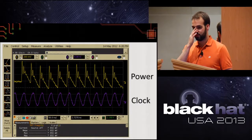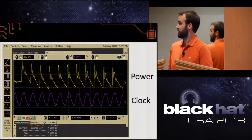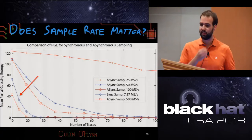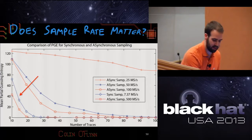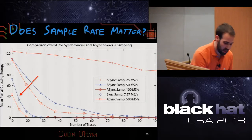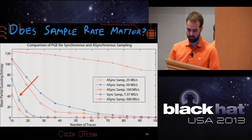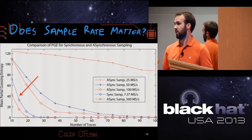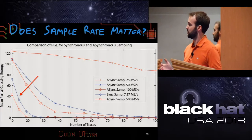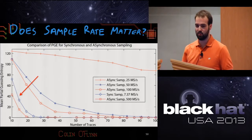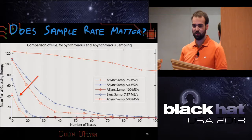As an alternative to cranking up the sample rate, take a smarter approach: it's a digital system, so you probably have a clock. Just use the device clock and sample on the clock. If you insert that into the graph, sampling at 7.37 mega samples per second — about 70 times slower than the 500 mega sample line — it's fairly successful. For this case it might not look so bad because you can buy a 500 mega sample oscilloscope. But if you're attacking AES hardware running at 24 MHz, you suddenly need a 2, 3, 4, or even 8 giga samples per second oscilloscope, which gets very pricey. Whereas if you only need to sample at 100 MHz, that's trivial with a few hundred dollars' worth of hardware.